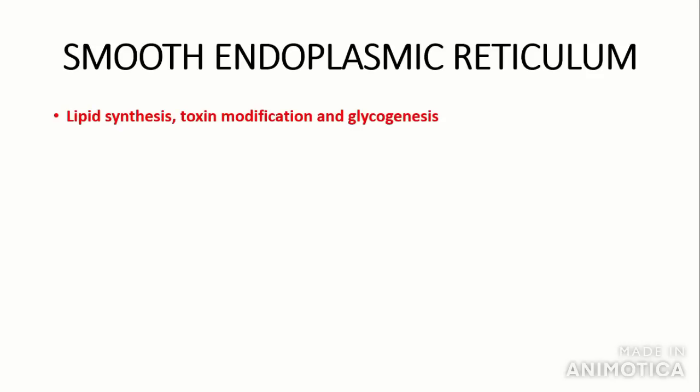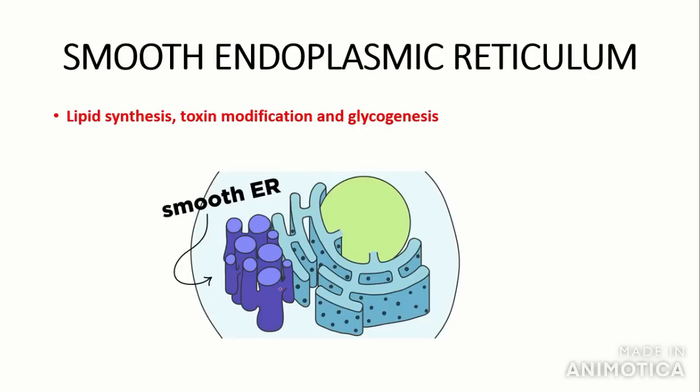Now we're going to talk about the smooth endoplasmic reticulum, or SER — please remember to write the full name. The main thing that distinguishes the smooth endoplasmic reticulum from the rough endoplasmic reticulum is that it does not have ribosomes attached to its surface. The main function of the SER is therefore lipid synthesis, toxin modification, and glycogenesis, which is the conversion between glucose and glycogen for energy storage. The smooth endoplasmic reticulum is often closely associated with the rough endoplasmic reticulum.